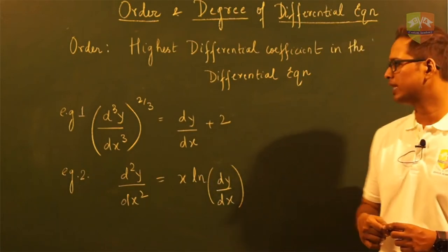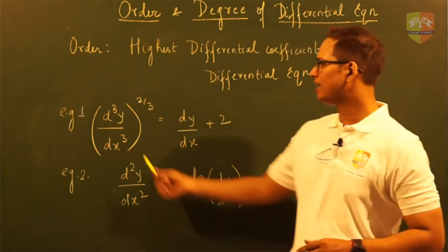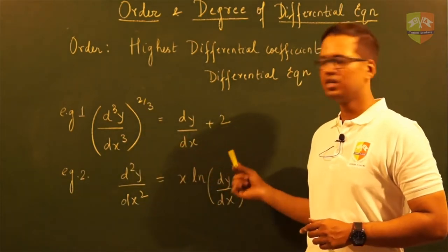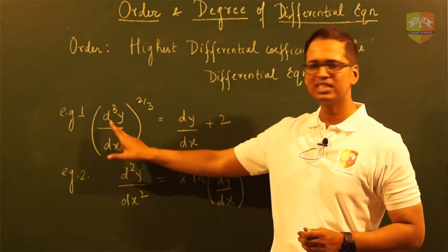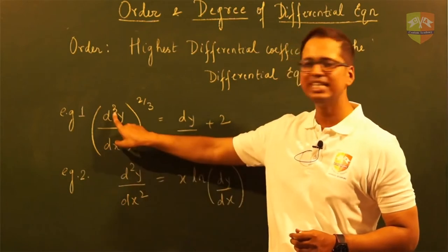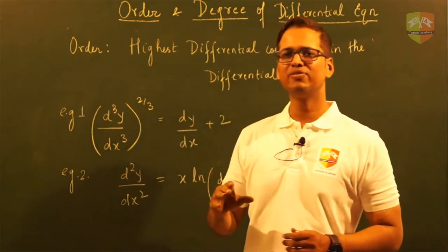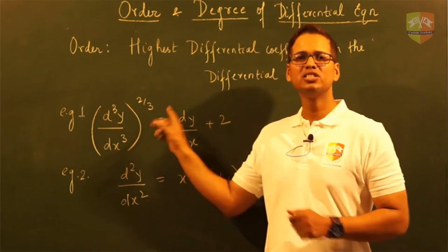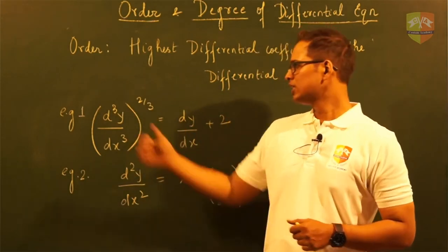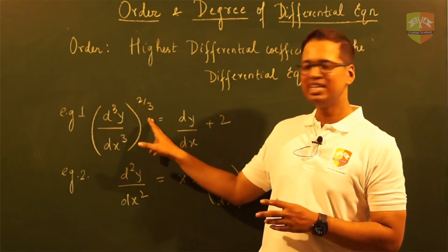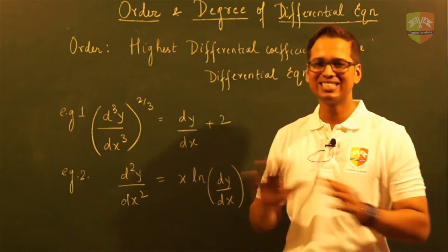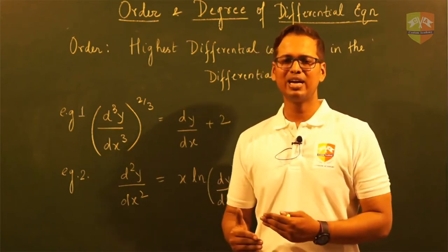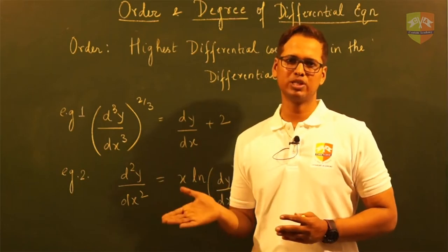To give an example: consider d³y/dx³ raised to the power of 2/3 equal to dy/dx + 2. In this differential equation, the highest differential coefficient of y with respect to x is 3, meaning y has been differentiated a maximum of three times with respect to x. Please note: this power of 2/3 has no relevance when deciding the order.